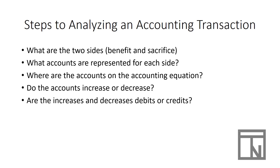From there we'll understand whether those increases need to be a debit or a credit. And finally, we can look at the total debits and total credits and ask: do they tie — meaning do they equal each other? These six questions are essential to understanding a transaction well enough to enter it as a journal entry.